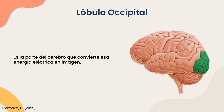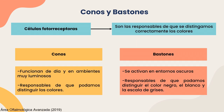Como punto importante, el lóbulo occipital, que es el que está marcado con verde en el cerebro, va a ser la parte que convierte la energía eléctrica en una imagen. También encontramos estructuras muy importantes que vendrían siendo los conos y bastones, células fotorreceptoras responsables de que distingamos correctamente los colores. Los conos funcionan de día y en ambientes luminosos, mientras que los bastones se activan en entornos oscuros y son responsables de distinguir entre el negro, el blanco y todas las escalas de grises.